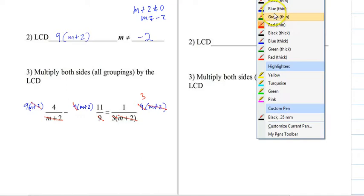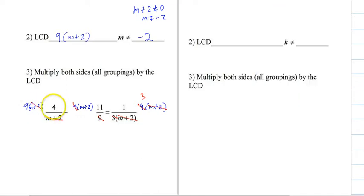And there we go. No more fractions. So what we end up with is a 9 times 4 minus an 11, an m plus 2, and equals 3. And I really recommend writing all of these out first. Don't just try to do it quickly. So we have 9 and 4, m plus 2 and 11, and then a 3. We don't want to miss anything.